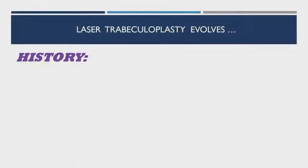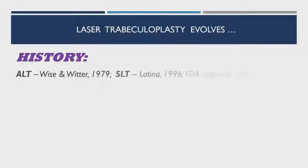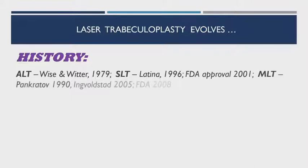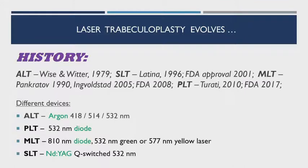Trabeculoplasty has evolved greatly over the last decades. The story began in the late 70s when Weiss and Witter came up with ALT. Then came Professor Latina with the revolutionary SLT, approved in 2001. Newer methods were then invented, like MLT and PLT. There are different types of lasers used and different wavelengths: ALT is argon; PLT and MLT are diode lasers; and SLT uses a second harmonic, Q-switched Nd:YAG laser.